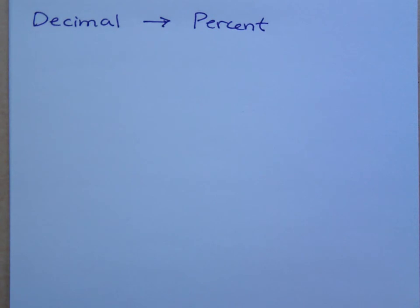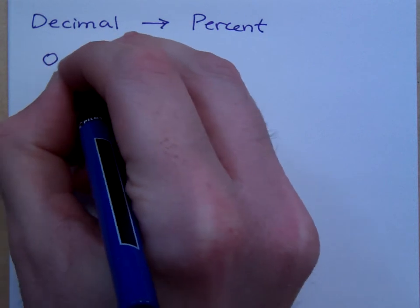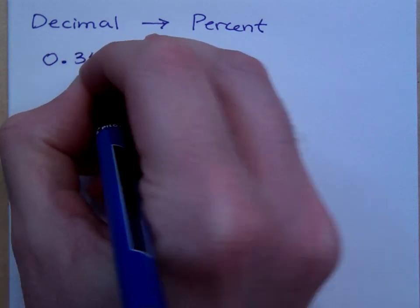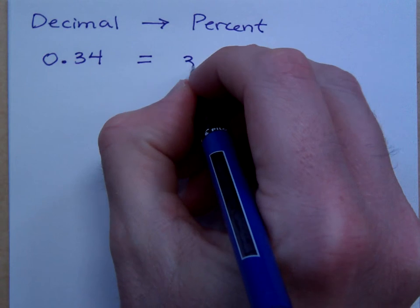What if I want to go backwards, though? What if I want to write a decimal as a percent? So if I gave you a decimal, and I say 0.34, what is that as a percent? This guy is 34%.